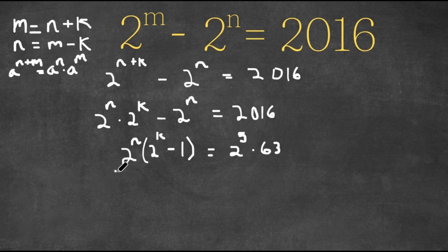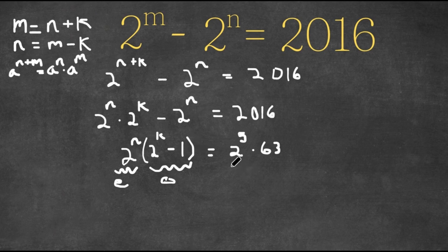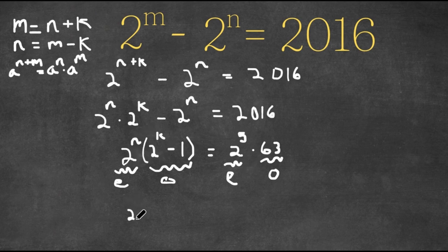Now, as you can see, 2 to the power of n is even, and 2 to the power of k minus 1 is odd, because 2 to the power of k is even and subtracting 1 makes it odd. On the right side, 2 to the power of 5 is even and 63 is odd. So I'm going to set the even parts equal to each other: 2 to the power of n equals 2 to the power of 5.